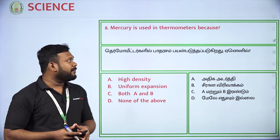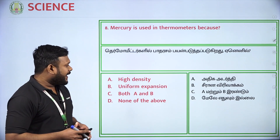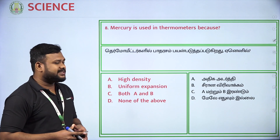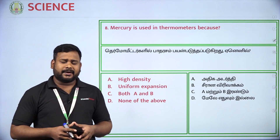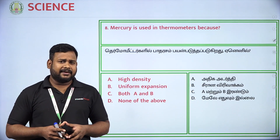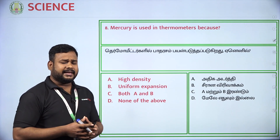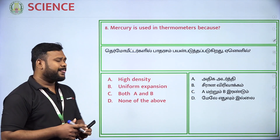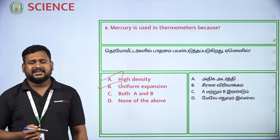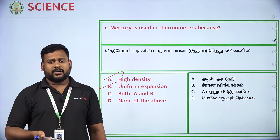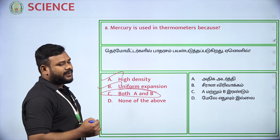Mercury is used in thermometers because of which property? Options: high density, uniform expansion, both A and B. Mercury possesses high density and its expansion is uniform. So option C — both A and B — is the answer.